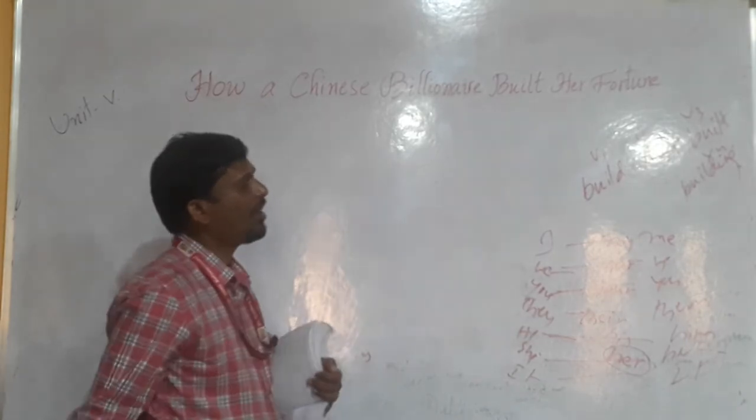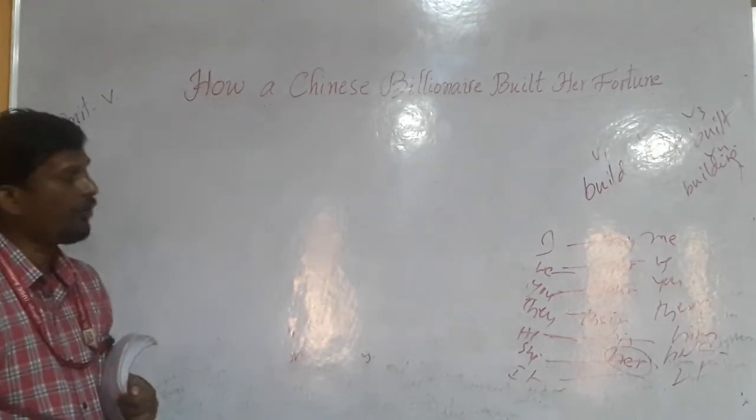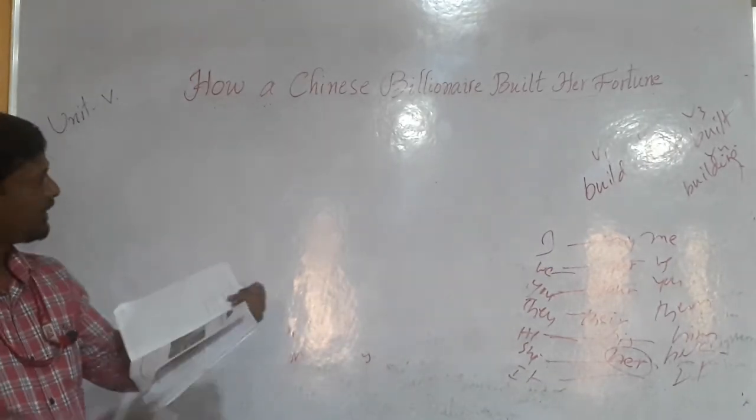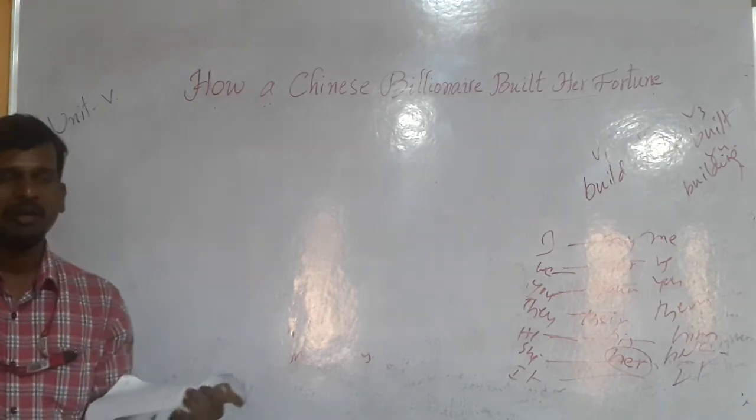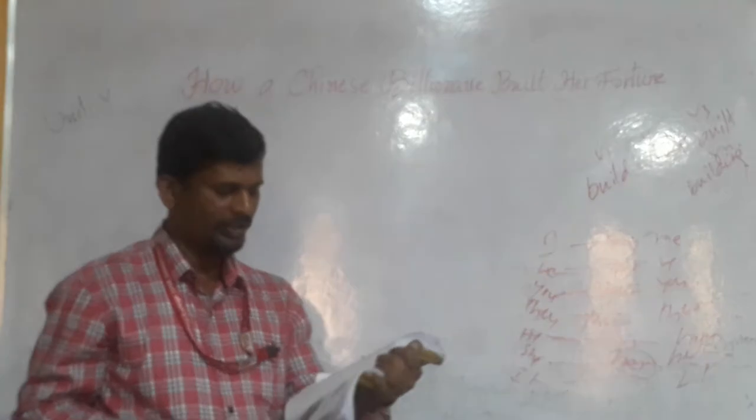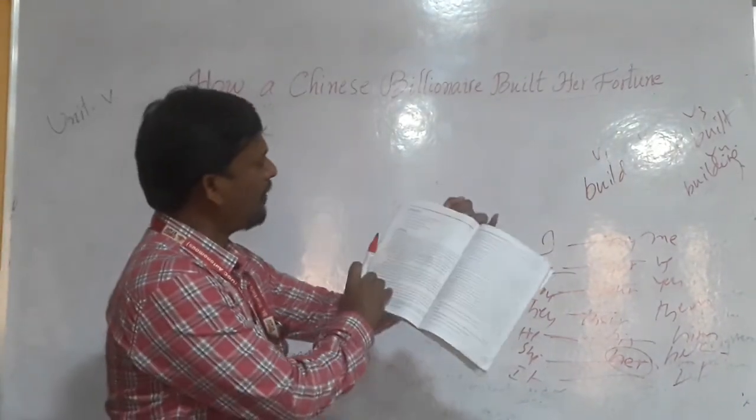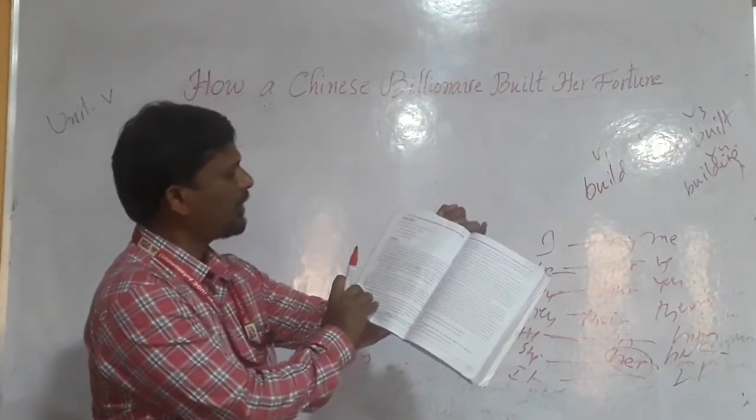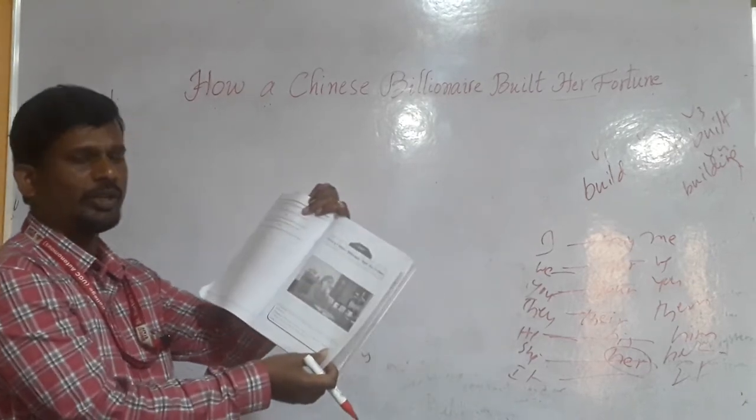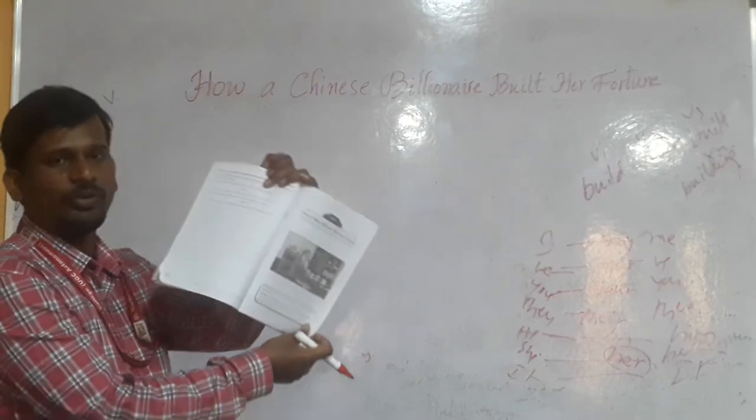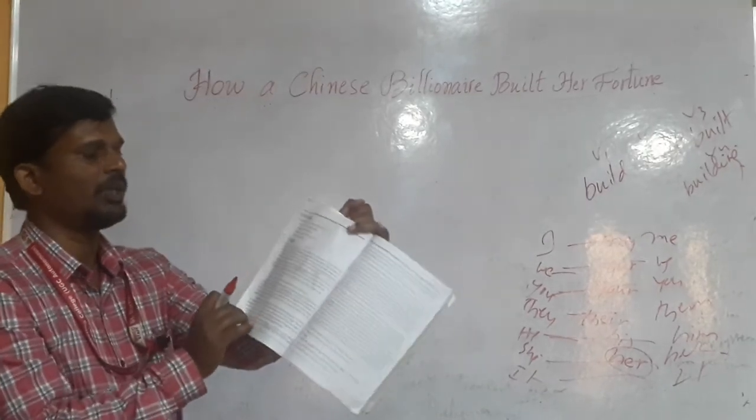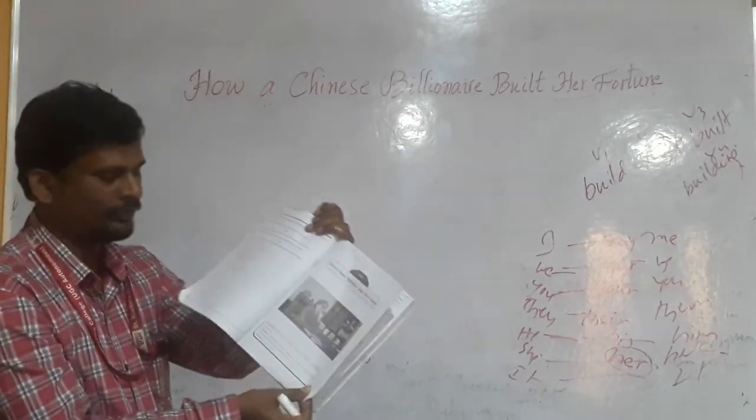Her fortune means here, her life story, how it became. How a Chinese billionaire built her fortune, how she built her future. See here, you can see, she is Jo Kunpei. She is Jo Kunpei. In our cover page, we can see neatness of appearance. Because in the first paragraph, they discuss about her appearance.